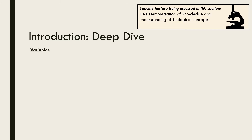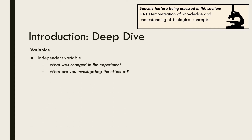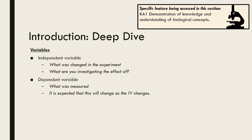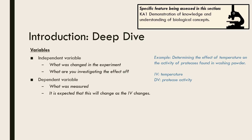The next step is to identify and classify variables. Start with the independent variable, which is what is being deliberately manipulated during the experiment — whatever you are investigating the effect of. The dependent variable is what was measured and is the variable that you expect to change as the independent variable changes. In our earlier example, what was deliberately manipulated was temperature, so that is the independent variable. What was measured was protease activity, and we would expect this to change as temperature changes — hence protease activity is the dependent variable.